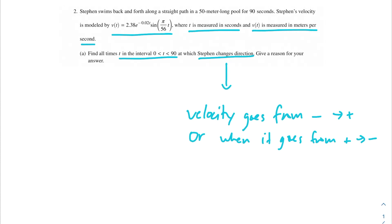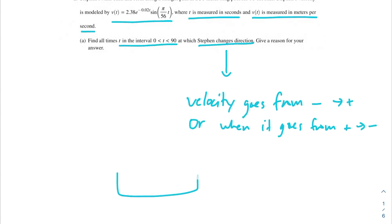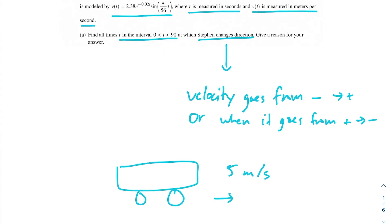If we think about this like a car — if a car was going 5 meters per second in one direction and then started backing up at negative 10 meters per second, we would say it changed direction. Before, it was moving to the right; now it's moving to the left. It changed direction when its velocity went from positive to negative. We need to find that same thing for Stephen and his swimming path.